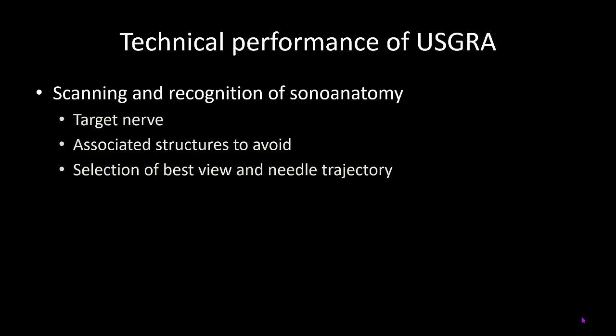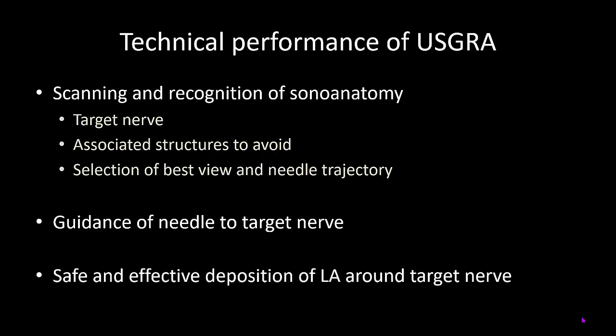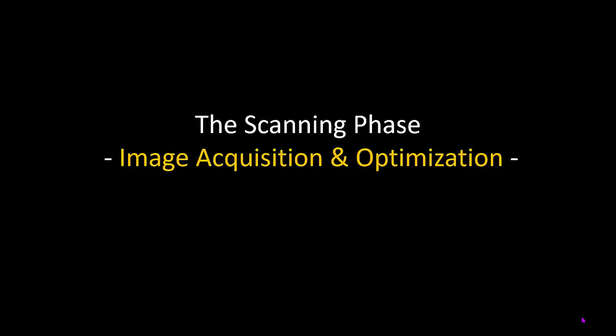There are three basic steps in the technical performance of ultrasound guided regional anesthesia. The first step is image acquisition, which means scanning and interpreting sonoanatomy, with the aim of identifying the target nerves, structures that should be avoided by your needle, and selecting the best view and needle trajectory to reach the target nerves. The second step is to insert and guide the needle to the target nerves, and finally to achieve safe and effective deposition of local anesthetic around these nerves. In this first part, we are going to look at the scanning phase of ultrasound guided regional anesthesia, which is all about image acquisition and optimization.